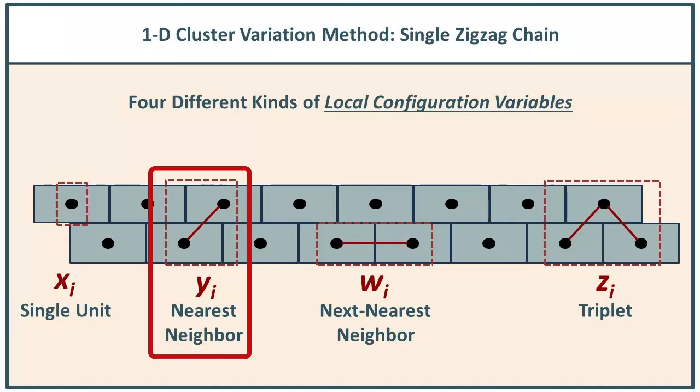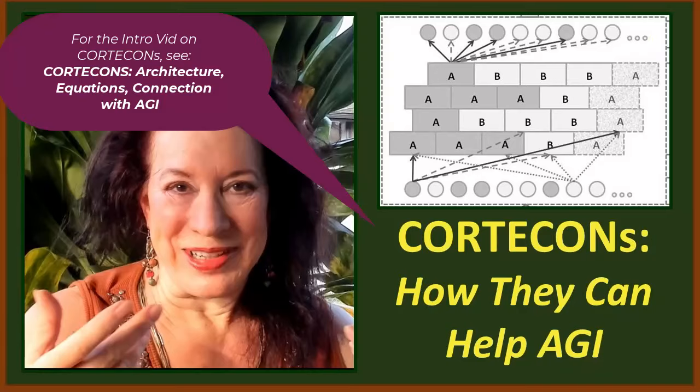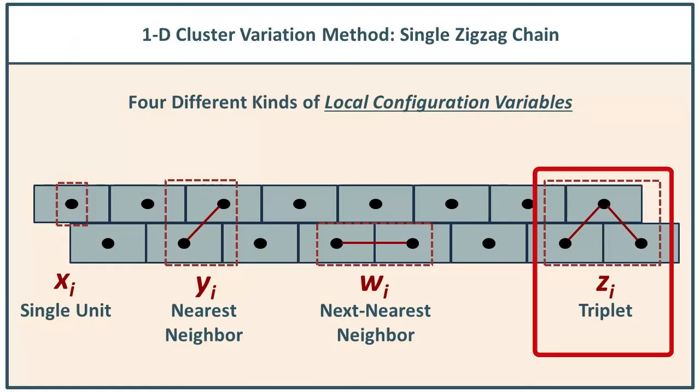We have a system — a grid of nodes laid out according to the one-dimensional cluster variation method single zigzag chain topography. Our initial grid configuration replicates one pattern three times, ensuring that we are at equilibrium for the case where epsilon zero equals zero (equal numbers of A and B) and epsilon 1 is also equal to zero — meaning we have no interactions between these nodes. We have created this grid so that we have the perfect number of at-equilibrium configuration variable values: the number of different y pairs (nearest neighbors on the diagonal), next-nearest-neighbor pairs (on the same row), and the numbers of different kinds of chevron-shaped triplets.